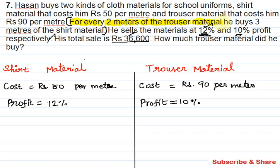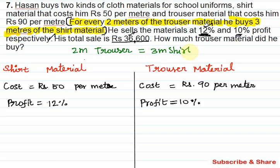For every 2 meters of trouser material, he buys 3 meters of shirt material. So 2 meters of trouser material corresponds to 3 meters of shirt material. This is the ratio: 2 meters trouser to 3 meters shirt.